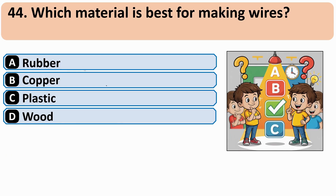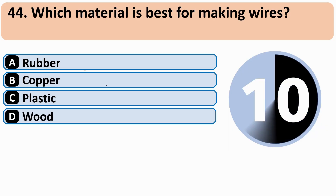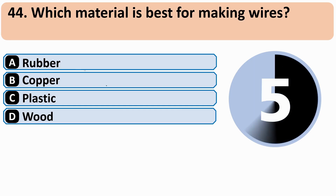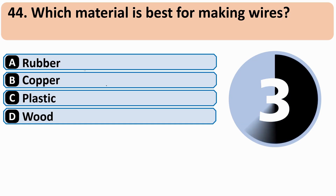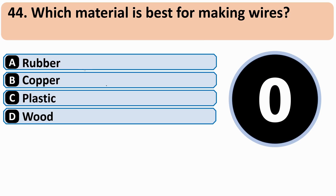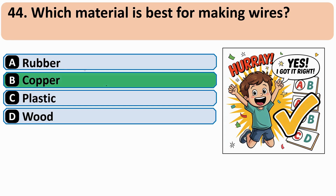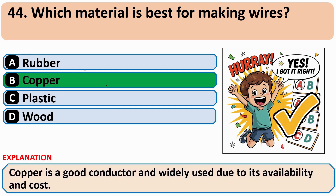Which material is best for making wire? The correct answer is B: Copper.